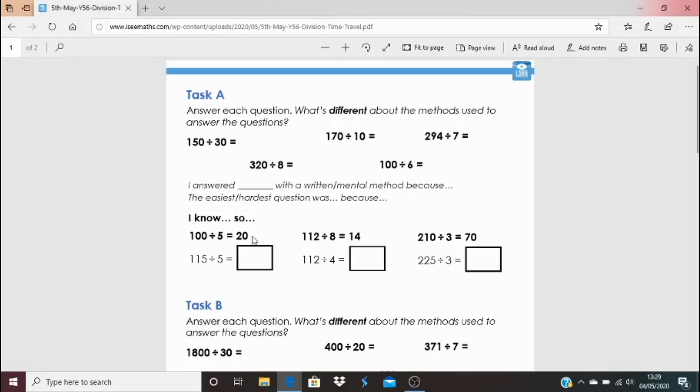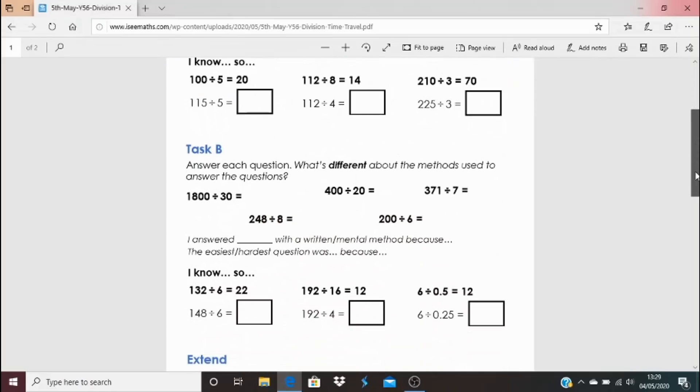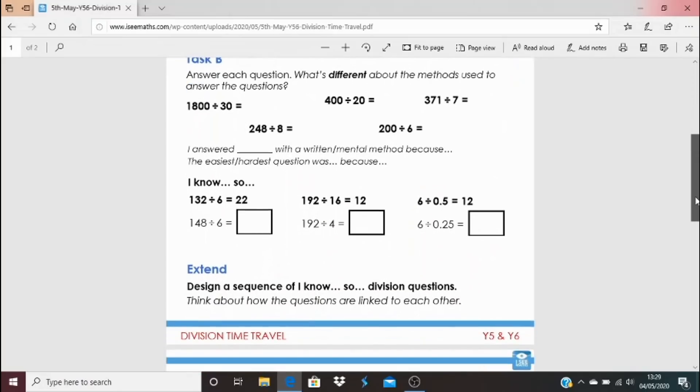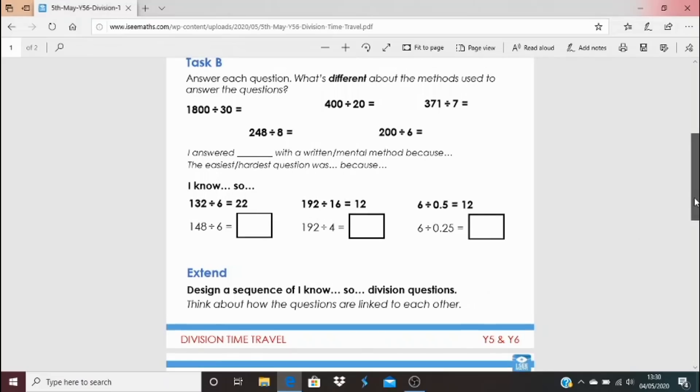Now on the video we haven't looked at the I know and so strategy, but I thought I'd just give you a little go. And again don't worry if you find it hard to access these tasks, but I'd be very interested if anyone does manage to understand the links here. So I've got a division fact at the top. How can you use this division fact, like 100 divided by 5 equals 20, to work out the answer to another division calculation like 115 divided by 5? See if you can apply the understanding that we've built in this video to do that. You might want to have a go at task B, a little bit more challenge in the calculations involved there.